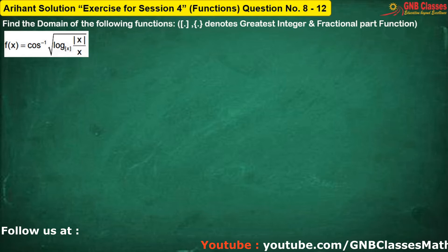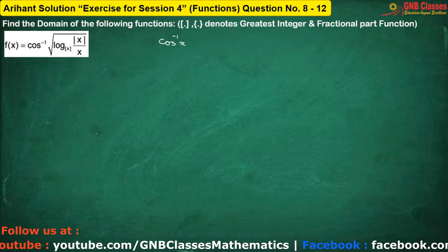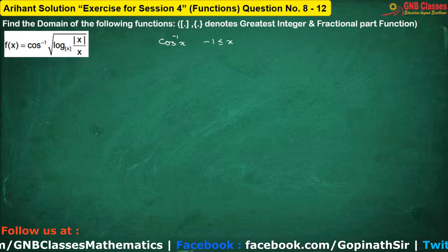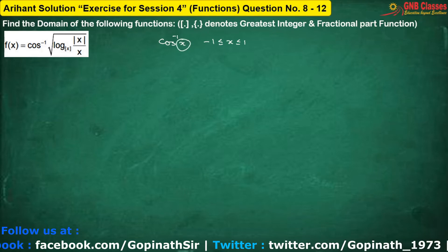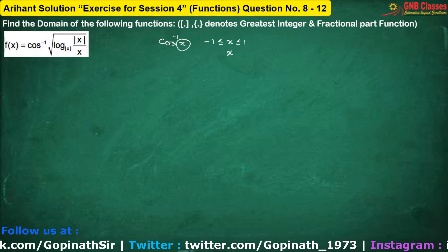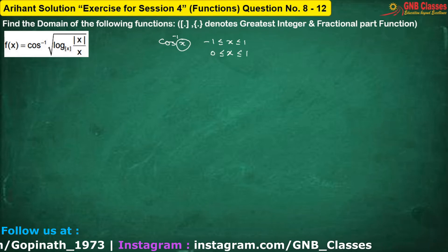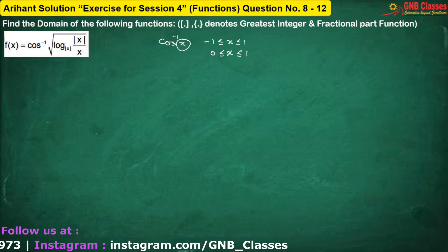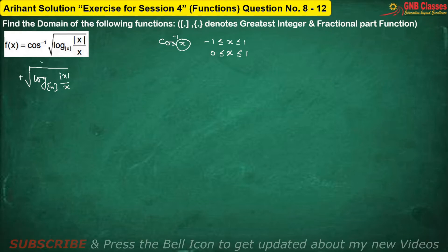To define the function, we know that for cos inverse x, x always lies between minus 1 and 1. Now, if x is positive, then x is lying between 0 and 1. Now observe this function before the root sign — before the root sign it is positive. Therefore, this part of the function lies between 0 and 1.